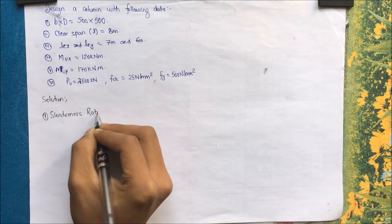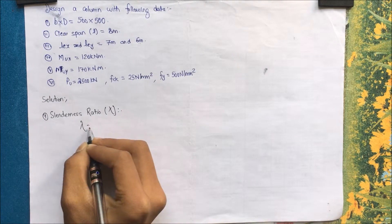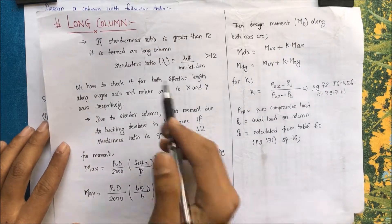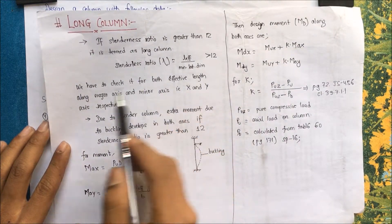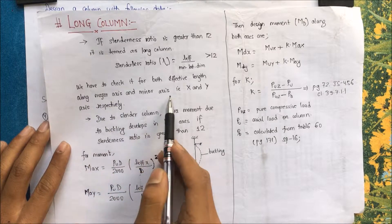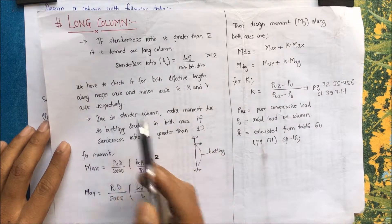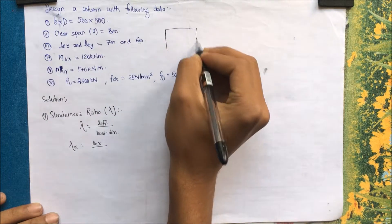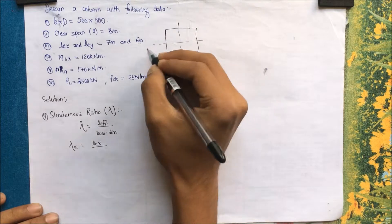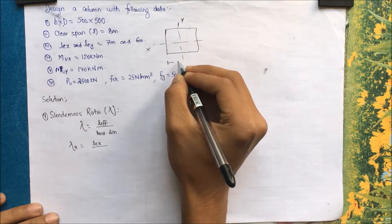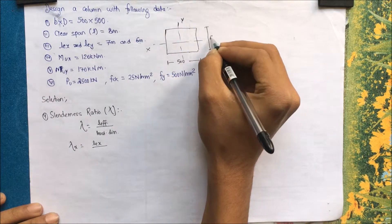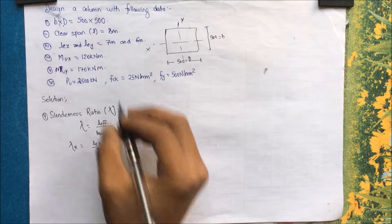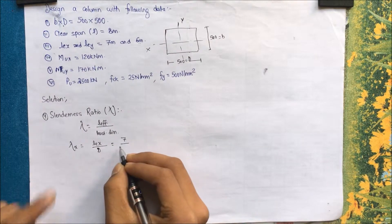Step 1: Calculation of slenderness ratio. For a long column, the column must be slender — we check l_effective divided by the least lateral dimension for both axes. Drawing the figure: along the x-axis we keep d, and along the y-axis we keep b, both are 500 mm. For λx: lex / d = 6.7 / 0.5 = 14, which is greater than 12.